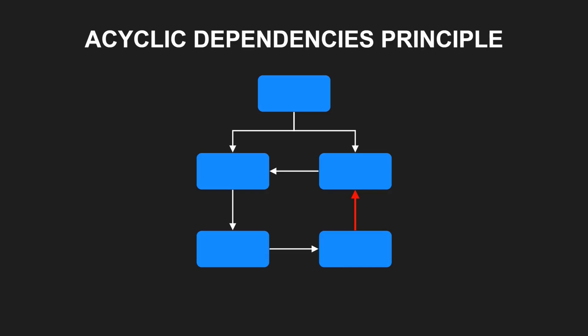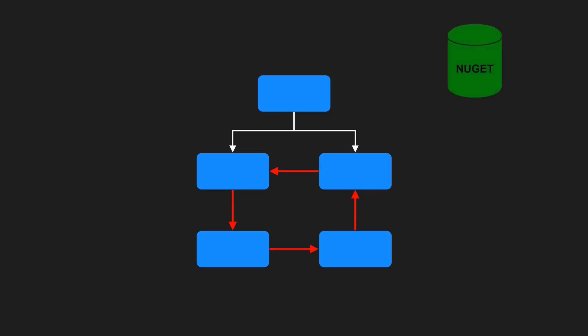But is a cyclic dependency something that can actually happen? Trying to create a cyclic dependency between projects in your IDE would result in a solution that wouldn't build, right? But remember, components are binary units.